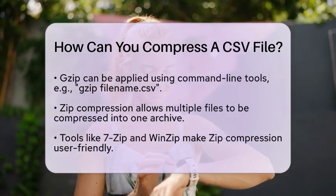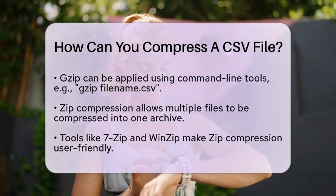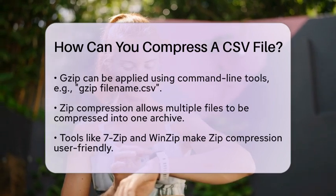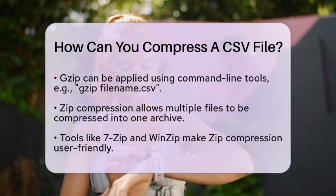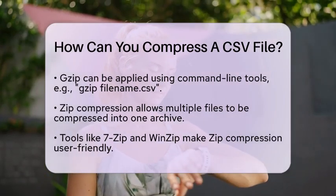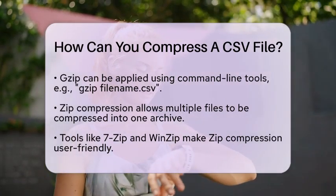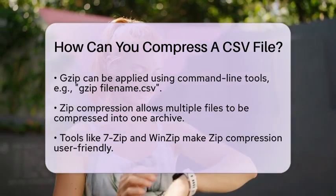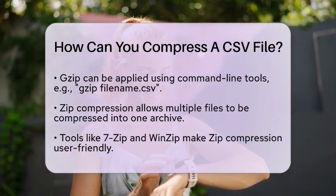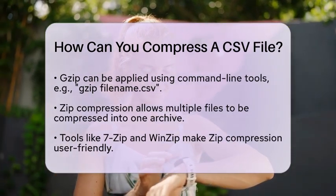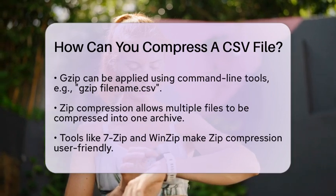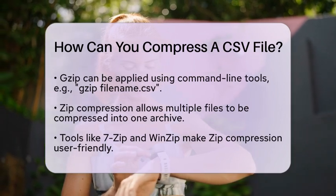If you are dealing with extremely large CSV files, especially those over four gigabytes, you might run into issues with standard compression methods. In such cases, consider splitting the file into smaller parts. You can compress each part separately to manage the size better. Alternatively, look for third-party tools that can handle larger files more efficiently.